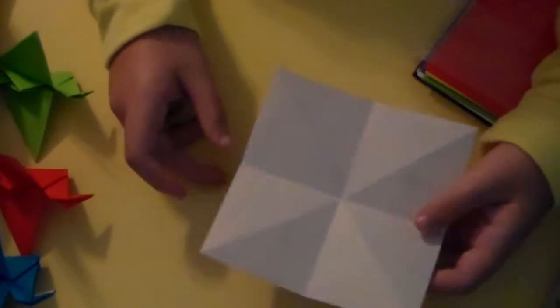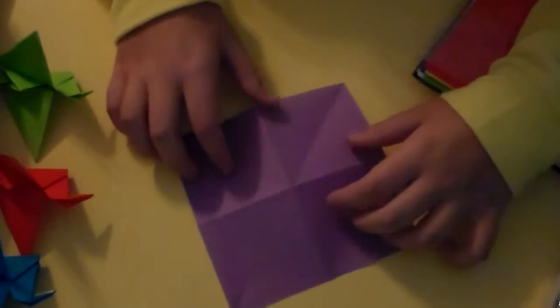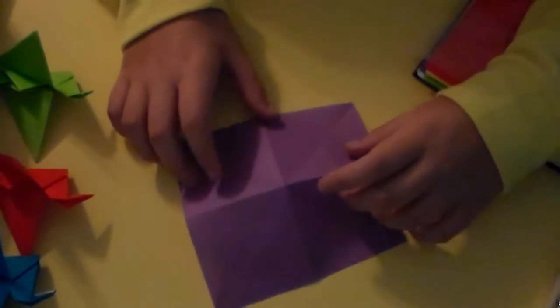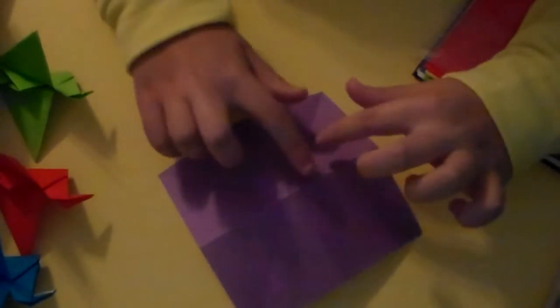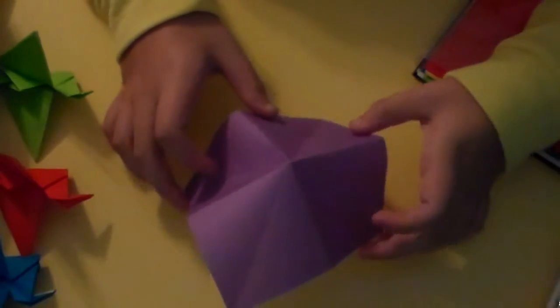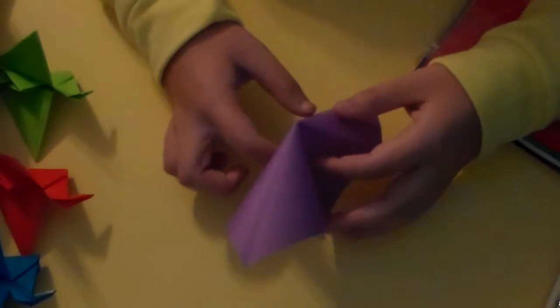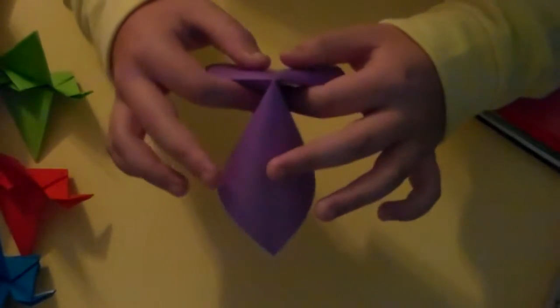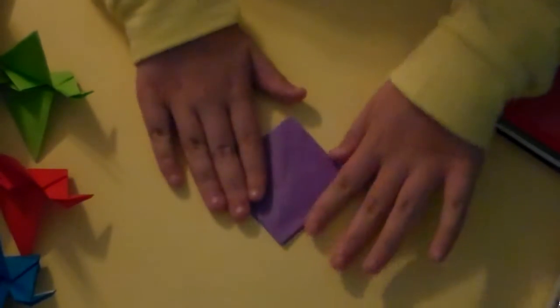So now you want to flip it back over to the purple side. And so you want these lines to be facing downward and you want these to be upward, if you know what I mean. You want to take it, take it off the ground, push these inward. Push these inward. Take this, fold it down, and smash it together.